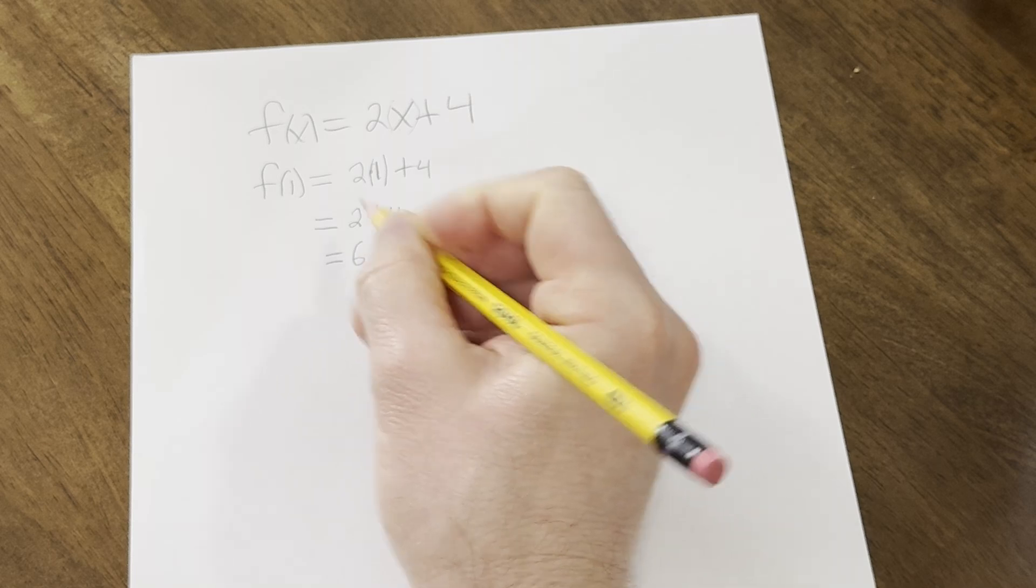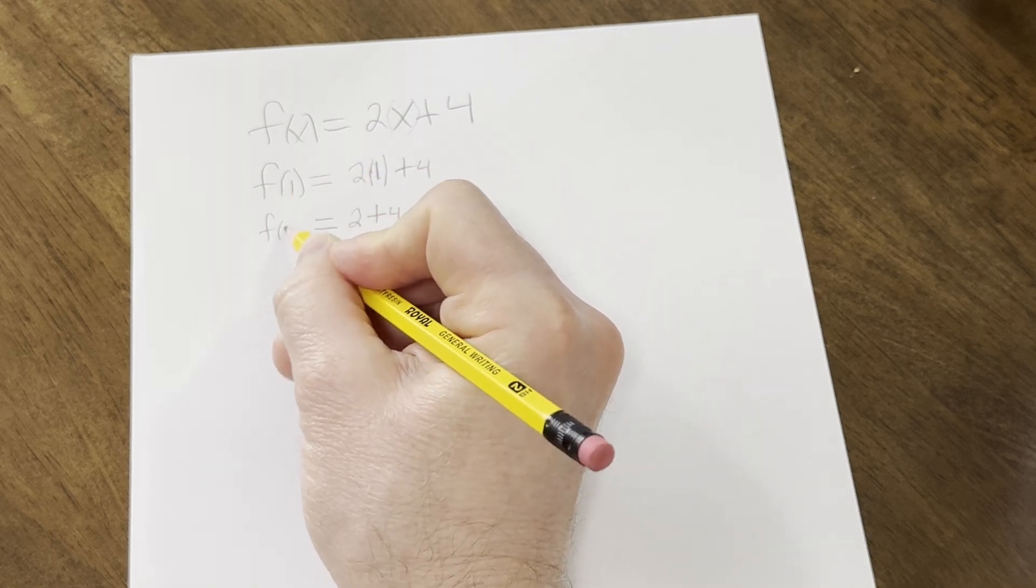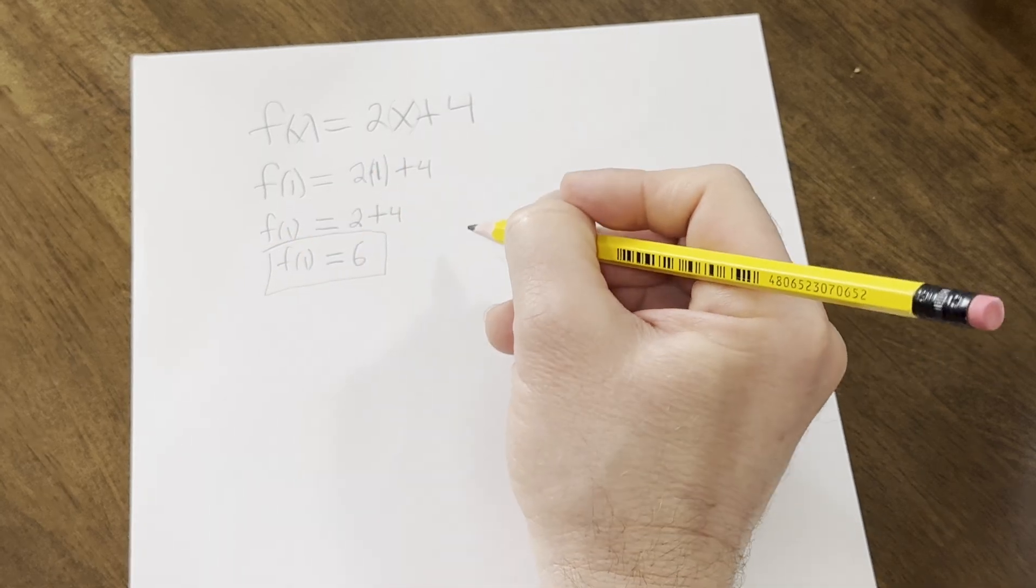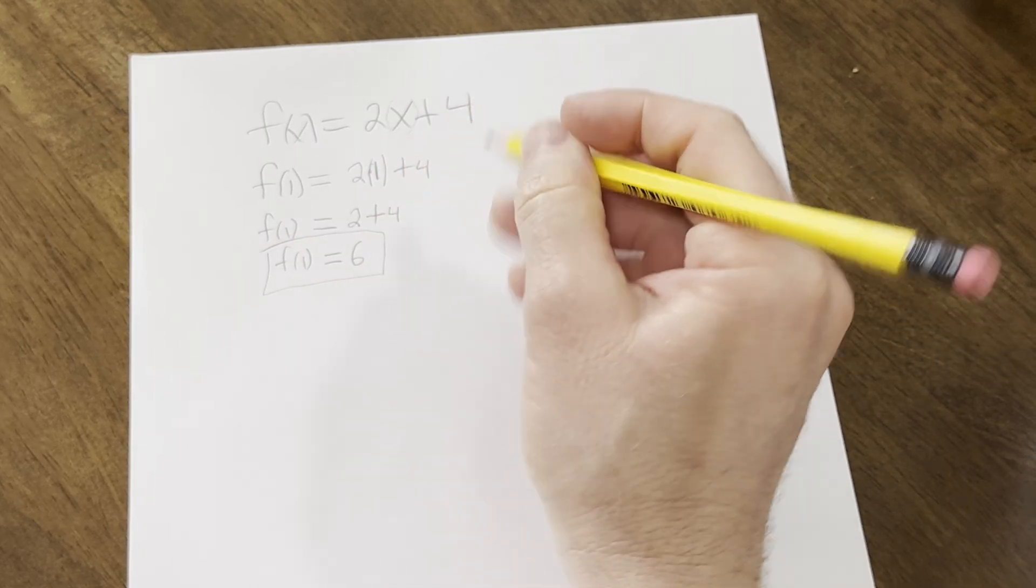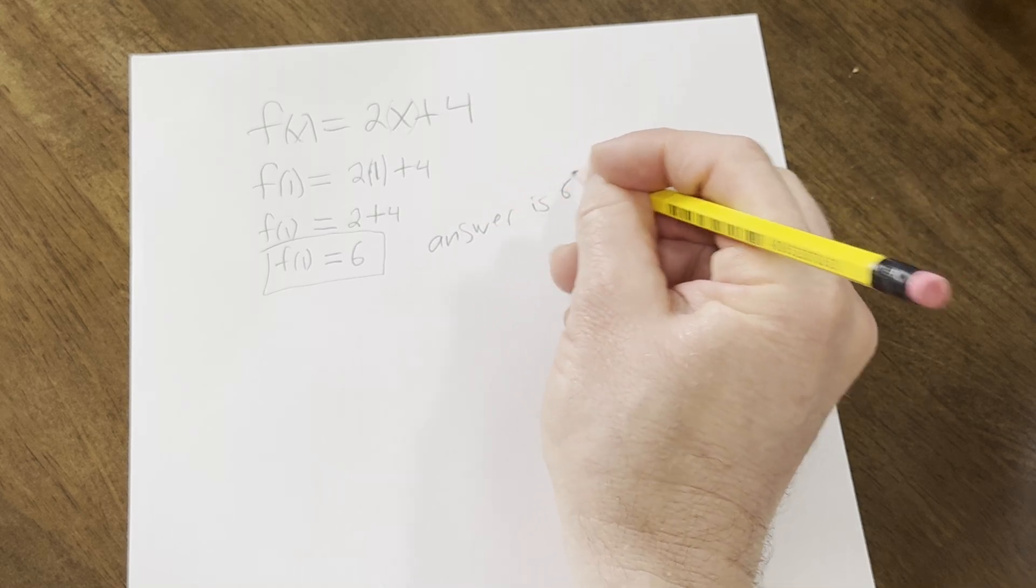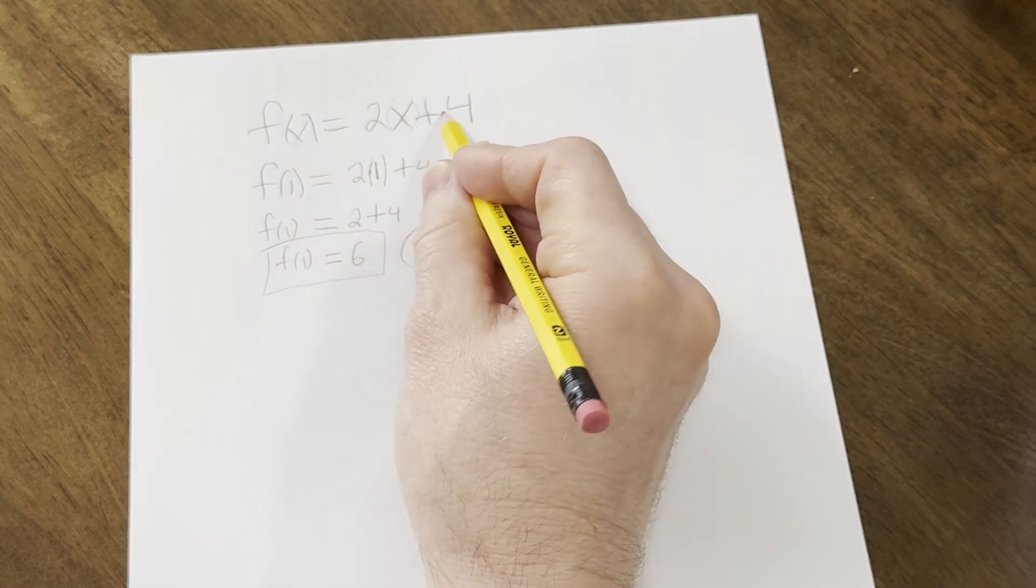So the answer is 6. You can write f(1) every time if you want. And that's it. So f(1) is equal to 6. That's the answer. So when you plug in 1, you get 6.